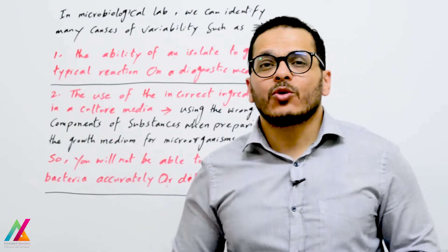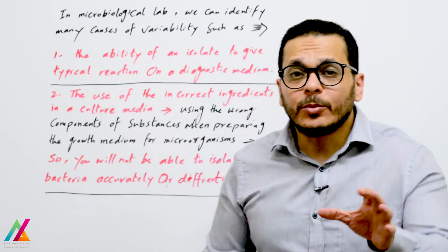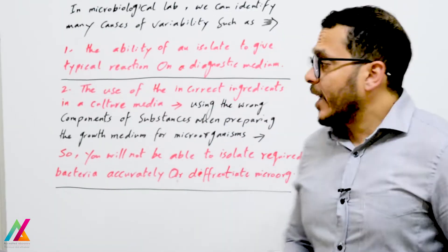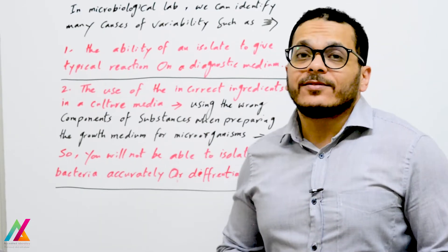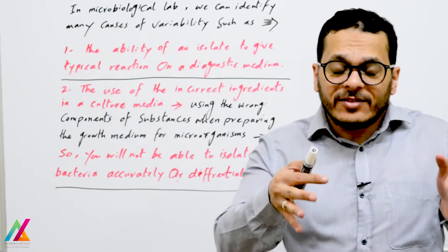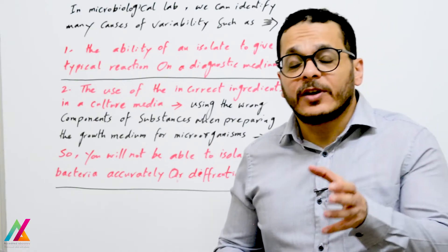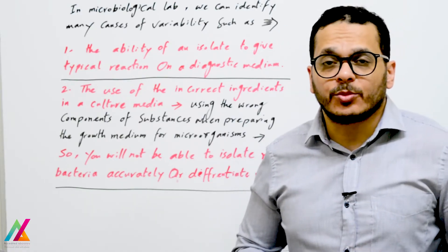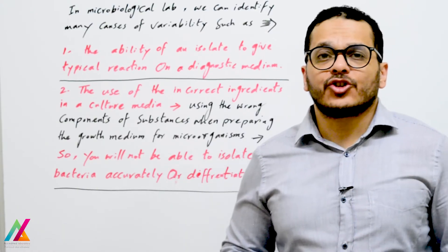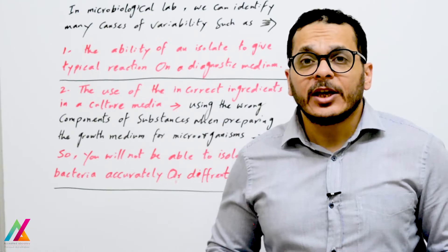In a microbiological lab, many causes of variability can be identified due to biological, instrumental, and personal bias that may affect the accuracy of results. These sources of variability should be calculated to give the measurement uncertainty value — for example, the ability of an isolate to give a typical reaction on a diagnostic medium, which can affect the accuracy of the measurement process.